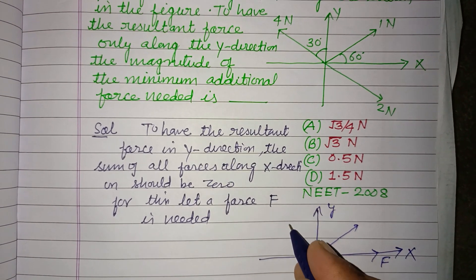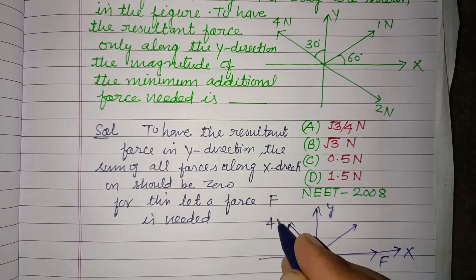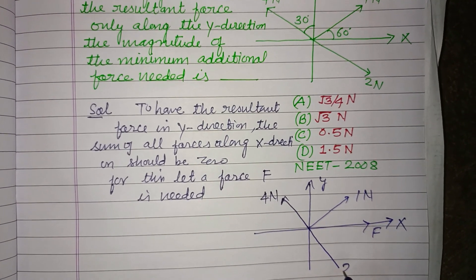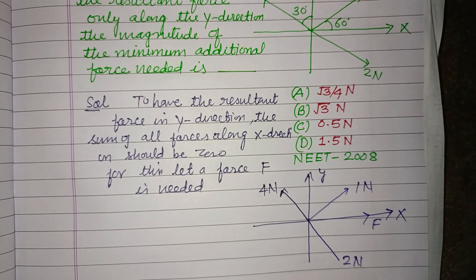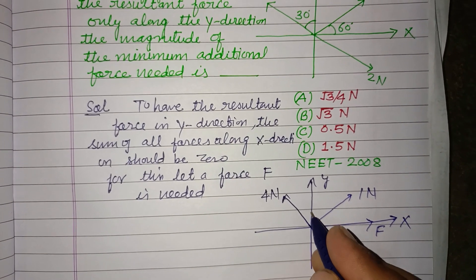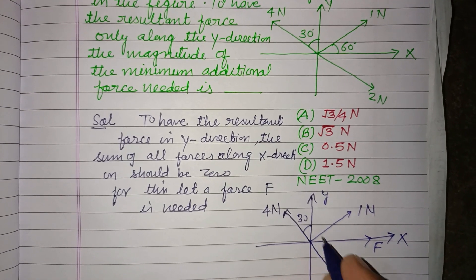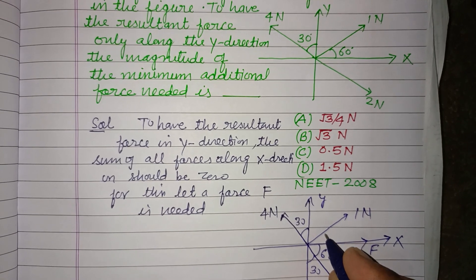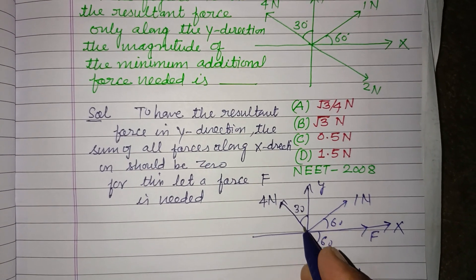And the given forces are: here four Newton, here one Newton, and here it is two Newton. Resolving these in x-direction, this is 30°, then this is 30°, this will be 60° and it is 60°.